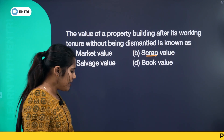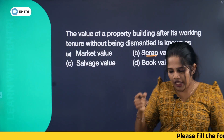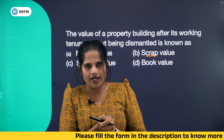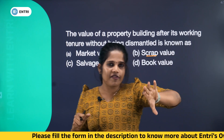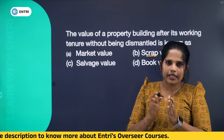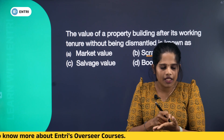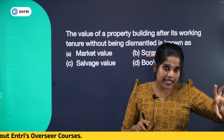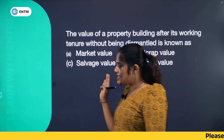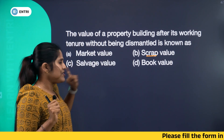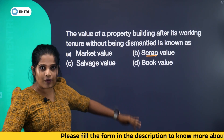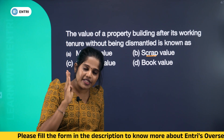Now the two other values are market value and book value. Market value is what a building sells for in the market. Book value is seen from the depreciation in accounting records. Since the question asks for value after working tenure without dismantling, the answer is salvage value. Scrap value involves dismantling.